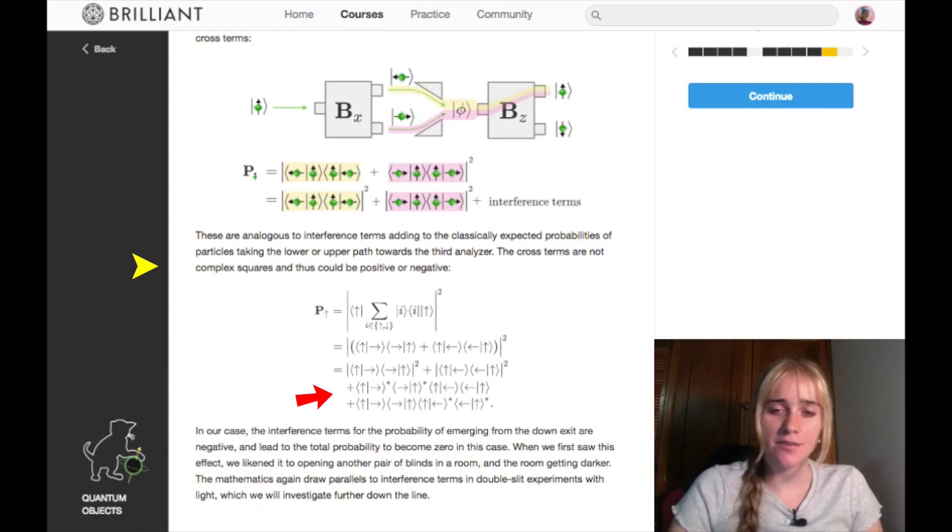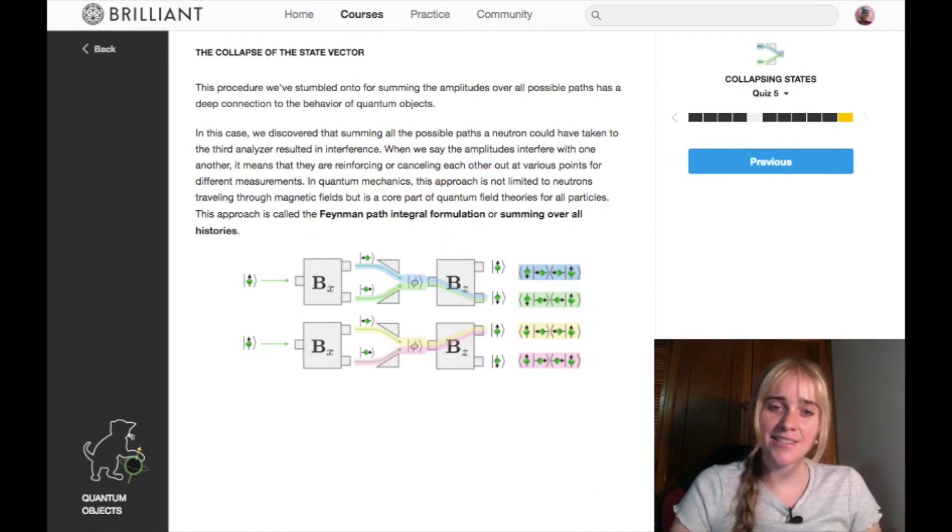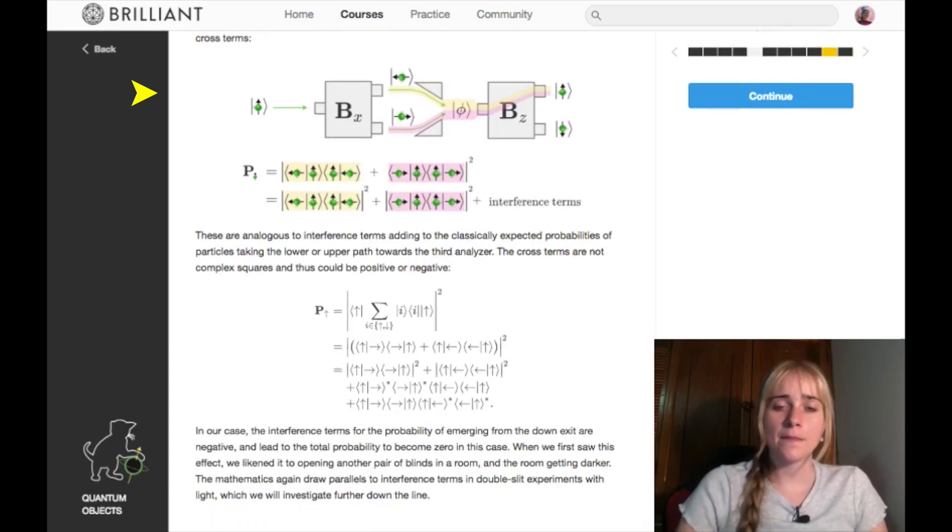It says here that our cross terms, which are these two, could be positive or negative. We don't really know, so this is our probability for the spin up. For the probability of being spin down, the interference terms work out to be negative, causing the total probability to be zero, which seems quite interesting and leads into what is our final point. And what it says we've stumbled onto - a way to sum the amplitudes over all possible paths. And we've seen it has a deep connection to the behavior of quantum objects. So really we know that from our experiment we were getting 100% of the neutrons emerging from the up channel and none from the down channel. But now we have a positive probability for emerging from the up channel and zero probability of emerging from the down channel just coming out in the mathematics by summing over all the possible options.